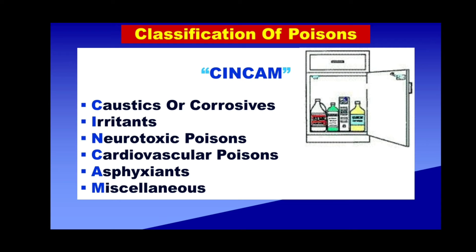There is also one other important irritant already dealt with — the resin. Then you have N for neurotoxic poisons, the second C for cardiovascular poisons, A for asphyxians, and M for miscellaneous. This is the standard classification, putting all poisons into six major groups, each of which of course has subdivisions.